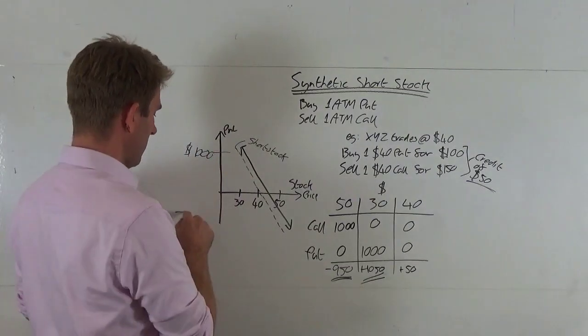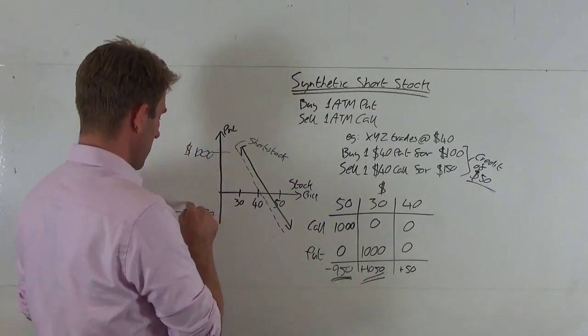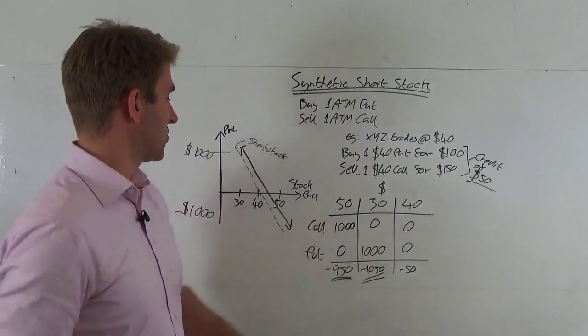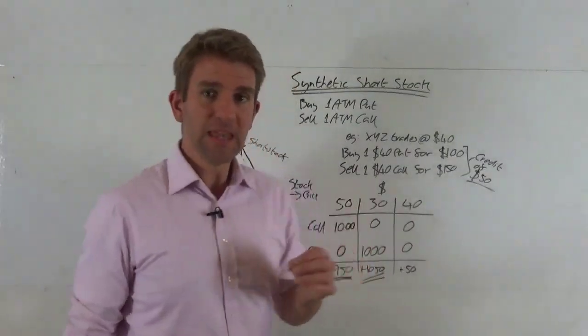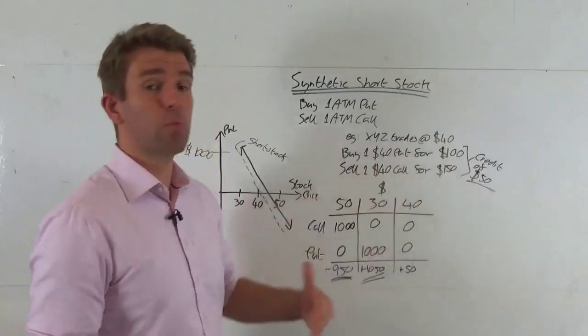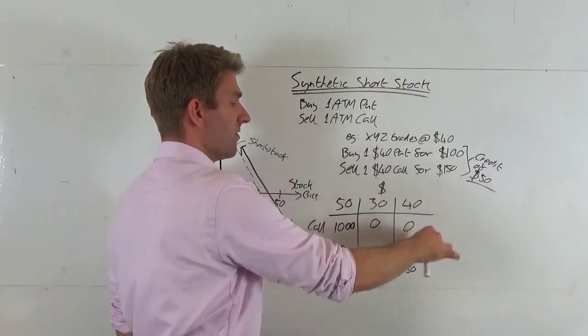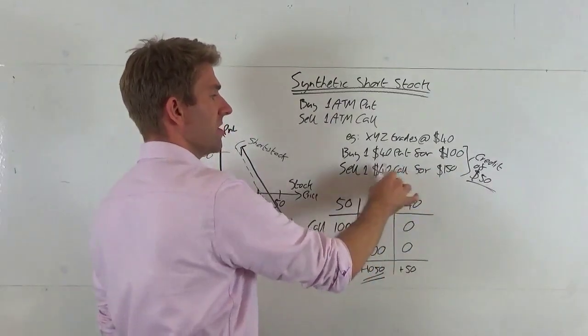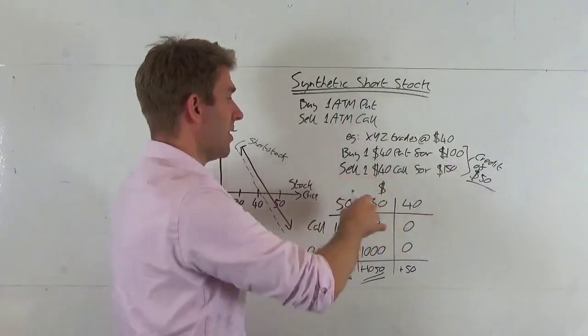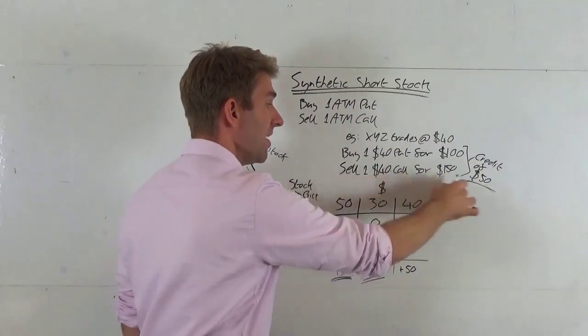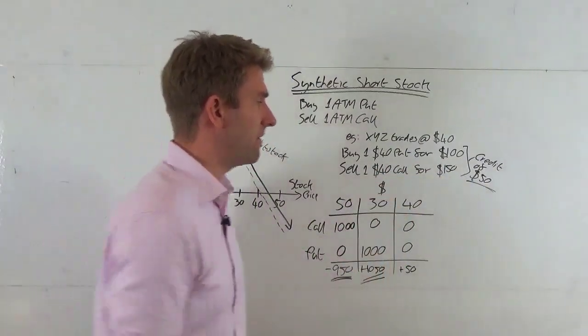What if it sticks at $40? Well, with these prices, the put expires worthless, the call expires worthless. We've lost $100 on that put, but we've made $150 on the call, with a net credit of $50.